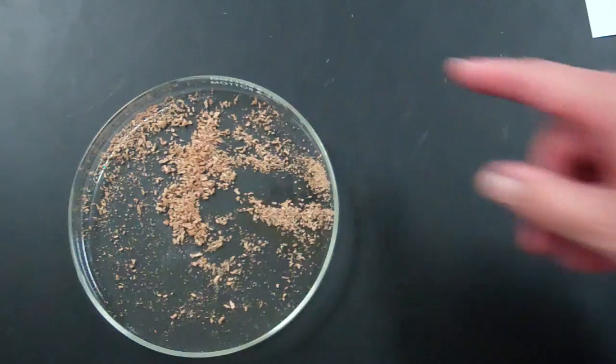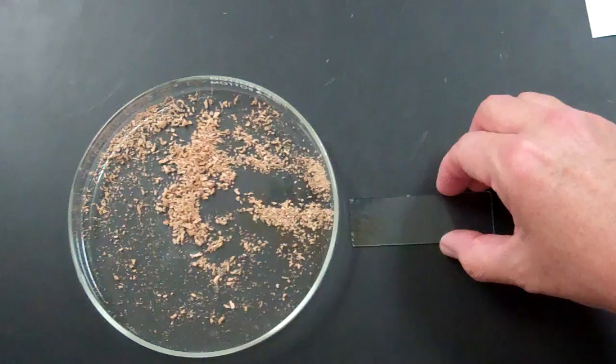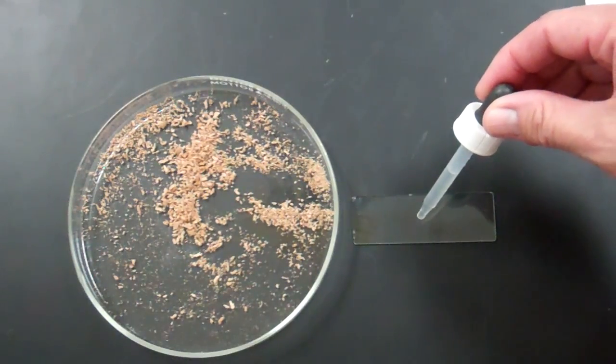To make the cork cell, you're going to come up to the front of the room. There's going to be a dish of cork shavings. Come up with your slide. It should already have at least one drop of water on it so the cork doesn't fly off your slide.